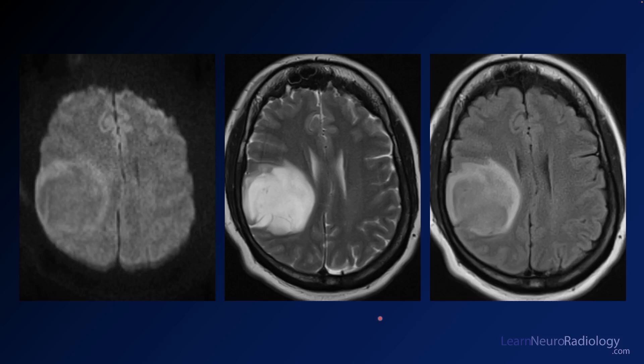Here we have some axial images from an MRI of the brain. On the left, you have a diffusion. In the middle, you have a T2. On the right, you have a FLAIR. Take a look at the abnormality that you're seeing there and formulate in your mind what you think that might be.